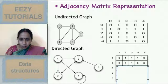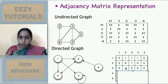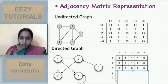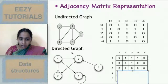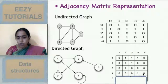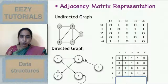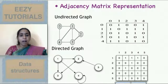For node 3, there is only one outgoing edge to node 2, so a[3][2] is 1 and all other entries are 0. For node 4, there is no outgoing edge except a self-loop, so a[4][4] is marked as 1 and all other entries are 0. For node 5, there is only one outgoing edge to node 2, so a[5][2] is 1 and all other entries are 0. This is how you mark the adjacency matrix for any directed or undirected graph.